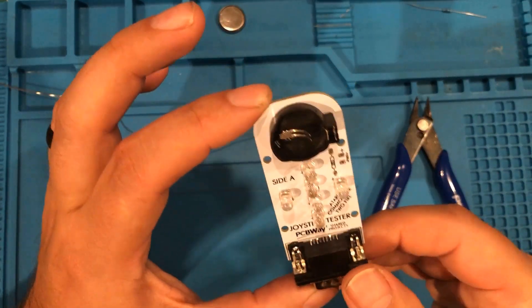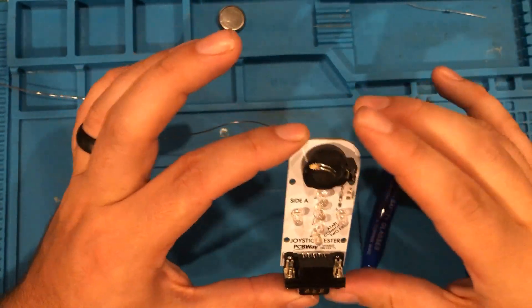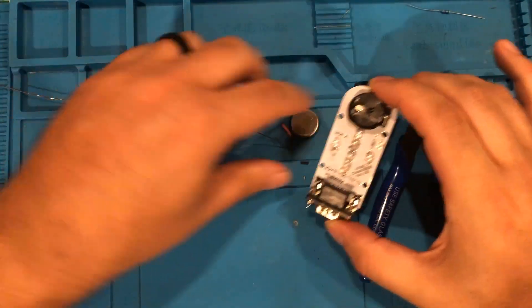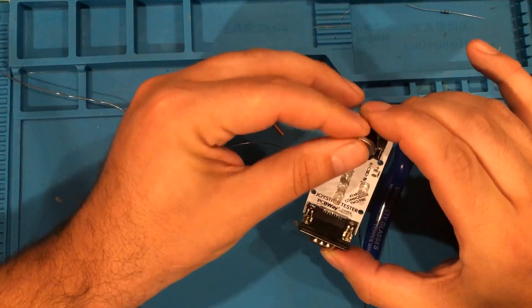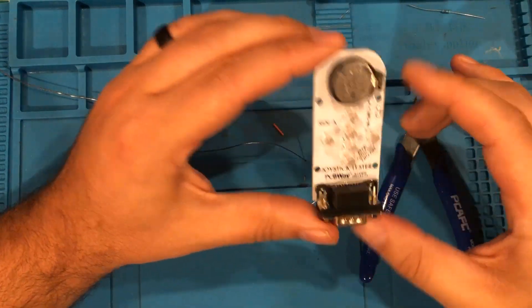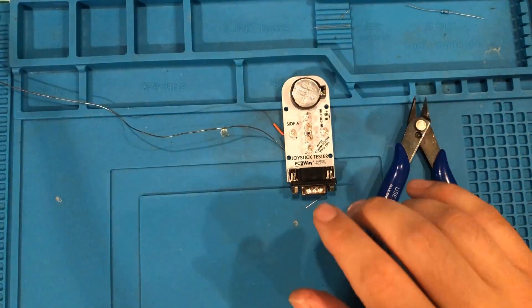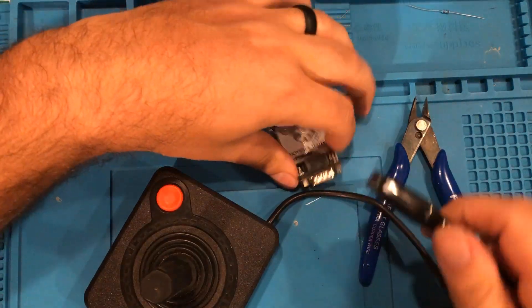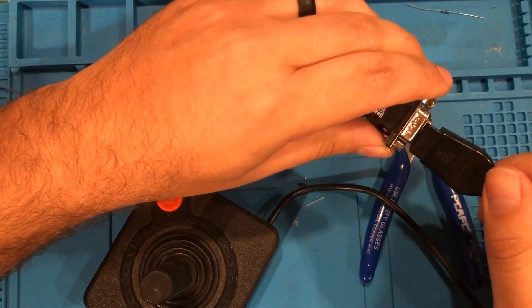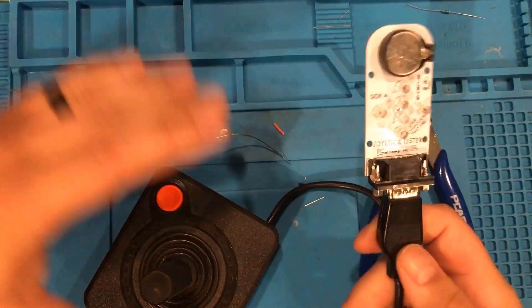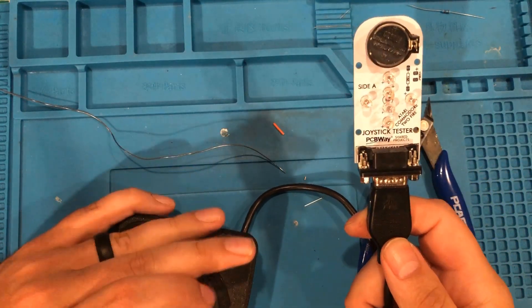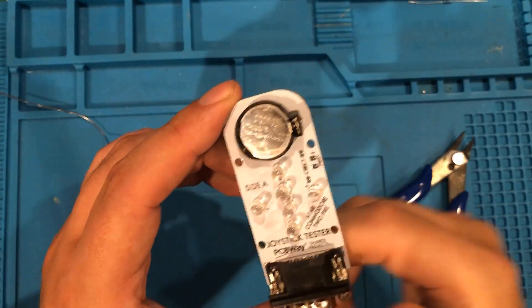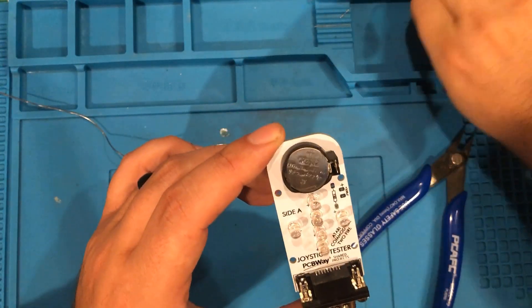So there you have it. That is the joystick tester. Now it's time to put the battery in and see how we did. We're going to pop, oh, it's hot. We're going to pop the 2032 battery in there, and let's find a joystick. And we're going to plug it in. And plugging it in does not work because I forgot one critical component.